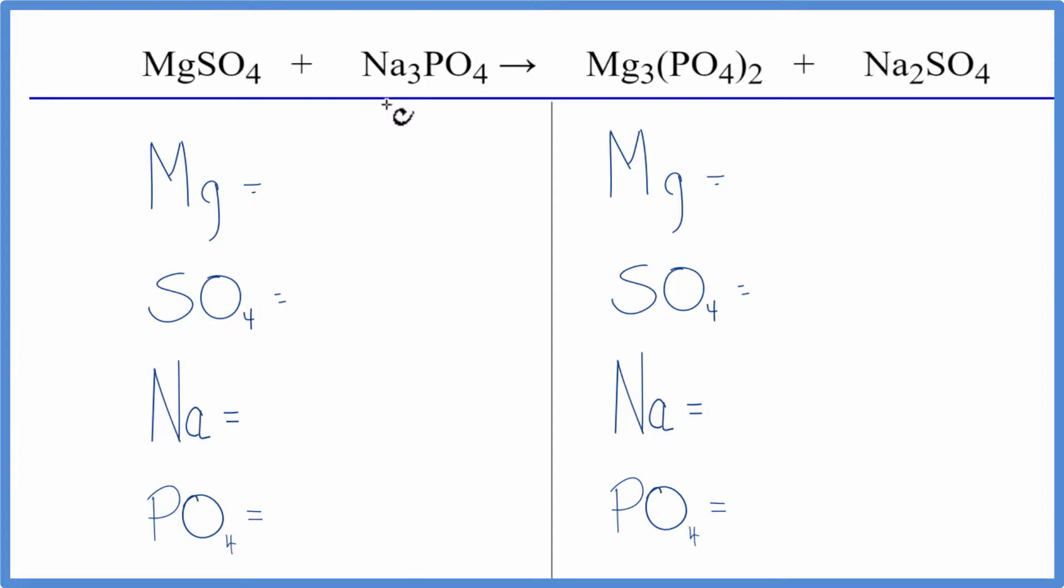With double displacement reactions, we have a little trick to help us balance the equation. Let's count the atoms on each side. We have one magnesium, and then SO4 appears here and here. It's called the sulfate ion. It stays together, so we're going to count this as one item to make things easier.